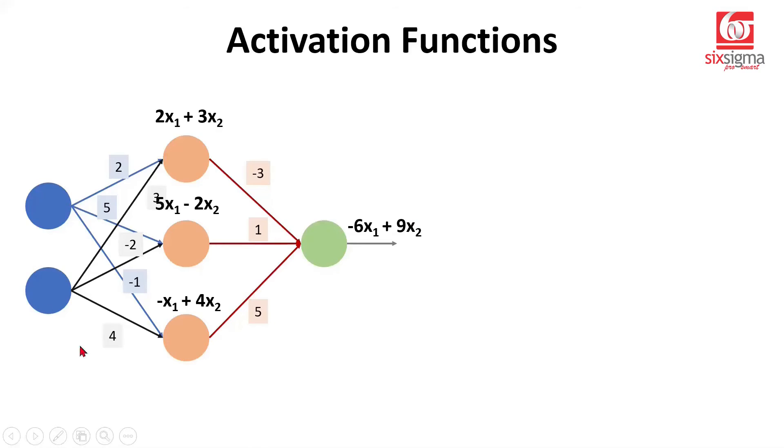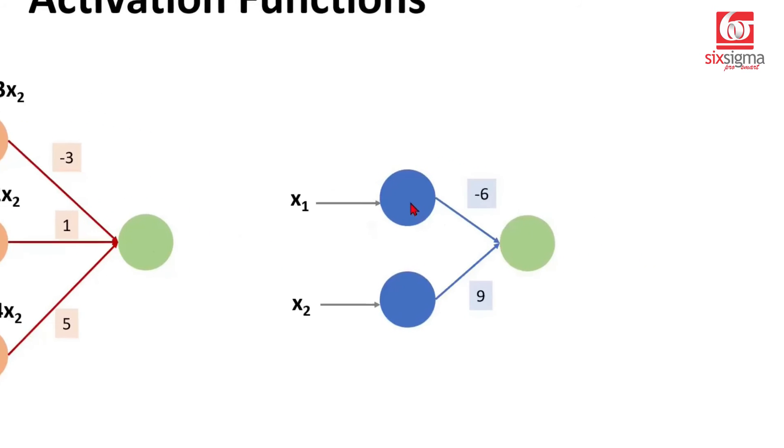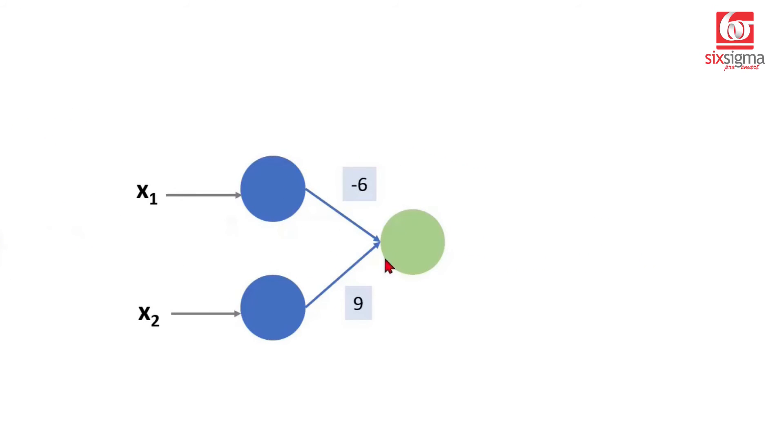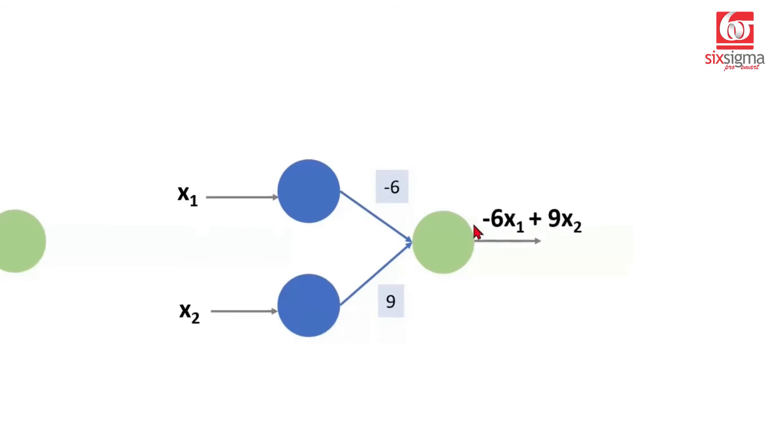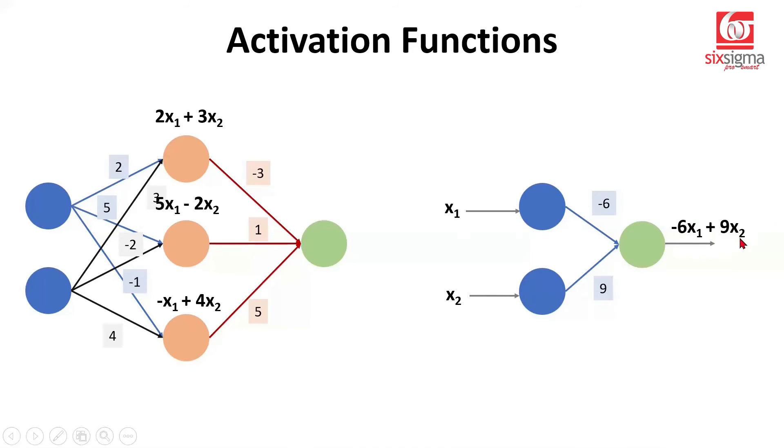So far, the scenario is exactly like this. We have all the weights, we had to do a lot of calculations, and we had to do the aggregations at different stages, at the hidden layer as well as the output layer. But can there be a simpler way to achieve this? Let's have a look. Let's say we don't have any hidden layer. We just have the inputs connected to the output, and the connection weights are -6 and 9. So this is -6x1 + 9x2. This is what the output would be, and this is the exact same output we got through these many calculations.